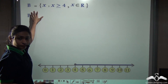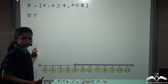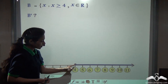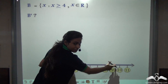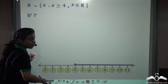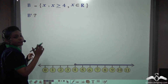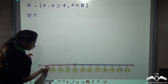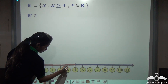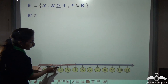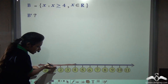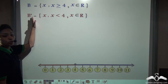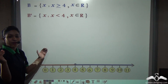Similarly, we can find B complement. If B is x such that x is greater than or equal to 4, you can see a filled circle showing equal to 4 and greater than 4. Then B complement will not have equal to 4, because equal to 4 is already present in set B. So B complement will have less than 4 — this part. B complement is x such that x is less than 4, and x belongs to real numbers. This is how we find complement elements of inequations using number lines when they are arranged in sets.